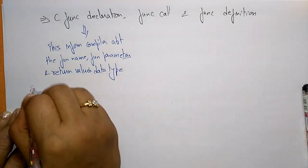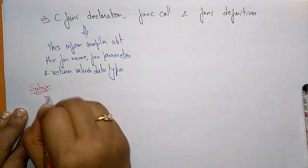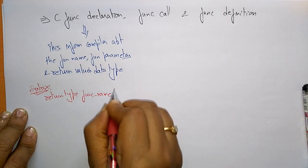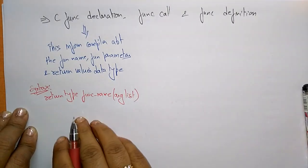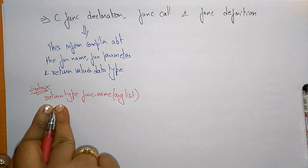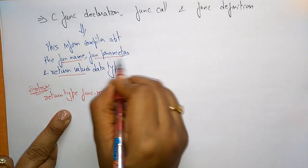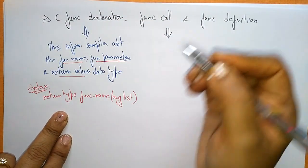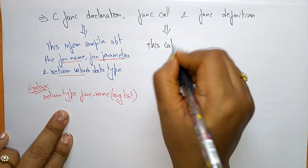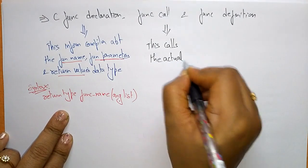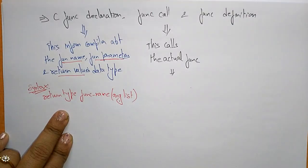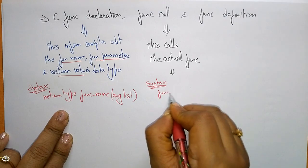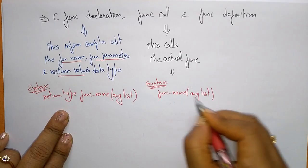The syntax for function declaration is: you write the return type, then the function name, then the argument list. This informs the compiler about the return type, function name, and function parameters. For a function call, it calls the actual function using the function name followed by the argument list in the parameters.